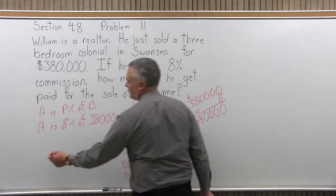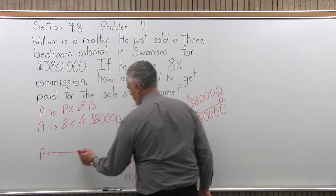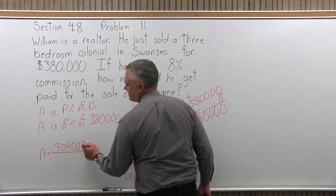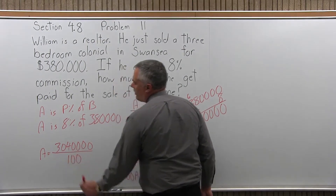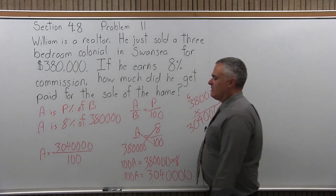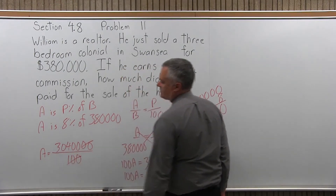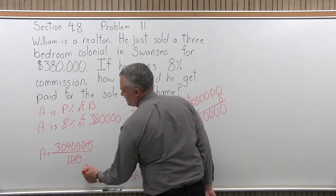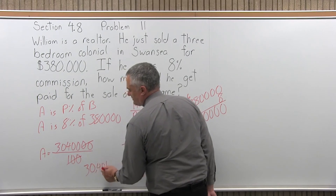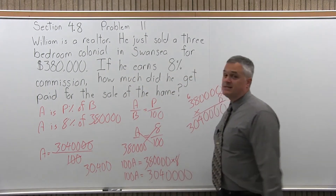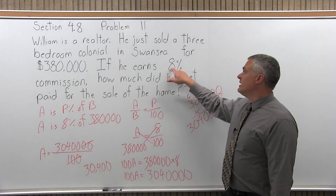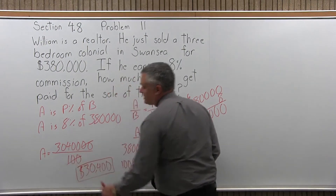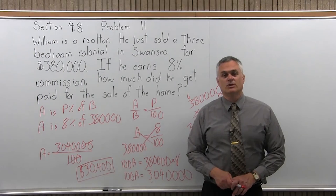So to get the final answer, I have to divide away the 100. So A equals 3,040,000 over 100. When you divide by 100, the two zeros in 100 cancel two of the zeros in the numerator. So my answer when I chop off two of the zeros comes to $30,400. That's the commission on selling a $380,000 home if the realtor earns an 8% commission — $30,400 is earned by the realtor for the sale of that home.